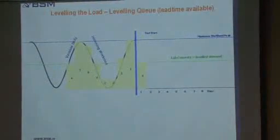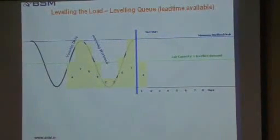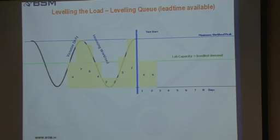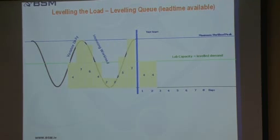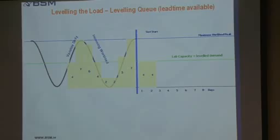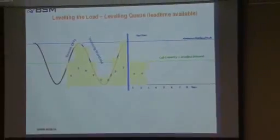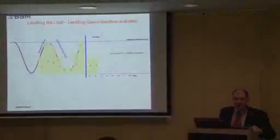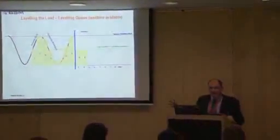On day one, we do four. They come out of the seven on the immediate left of the queue, which means we have three that we didn't start — left behind in the queue. The day after, we do four as well because that's the level of demand, which includes the three we didn't start the day previous, so they've aged a day. And we do one of the five that came in on the second day.